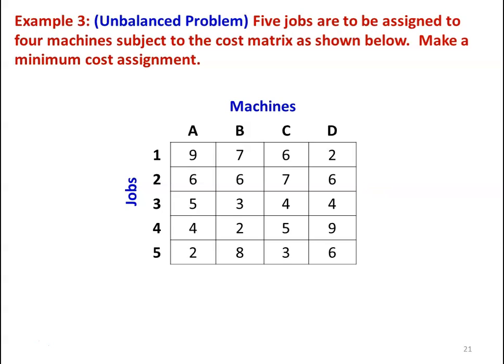In the earlier lecture, we solved 2 problems in the assignment model. Now, the third example: it is an unbalanced problem. Five jobs are to be assigned to 4 machines subject to the cost matrix as shown below. Make the minimum cost assignment.